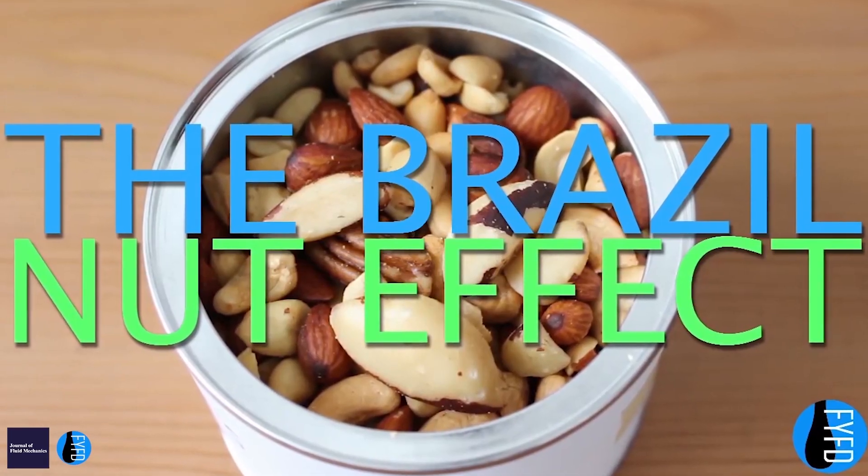It also appears in breakfast cereal. If you have a bag of muesli, at the start of the week you have all the nice Brazil nuts at the top. By the end of the week, you get to the bottom and have all the horrible dusty bits. That's why it's also known as the Brazil nut effect.